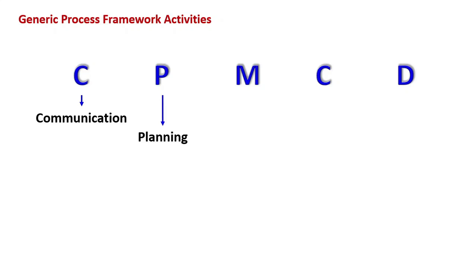A generic process framework encompasses five activities. You will see them on the screen. That is CPMCD. If you try to remember them in the same way, they will be remembered forever. Here, C stands for Communication, P stands for Planning, M stands for Modeling, there is again C and it stands for Construction, and D for Deployment.